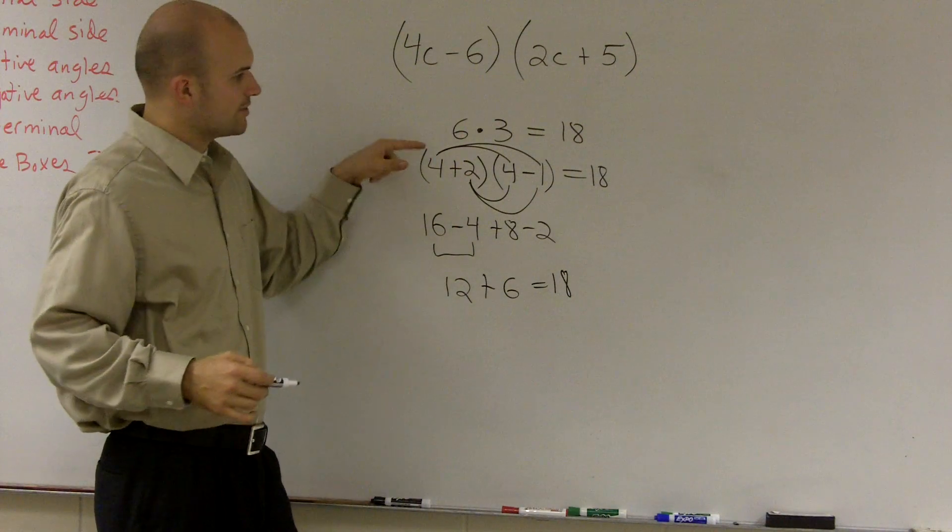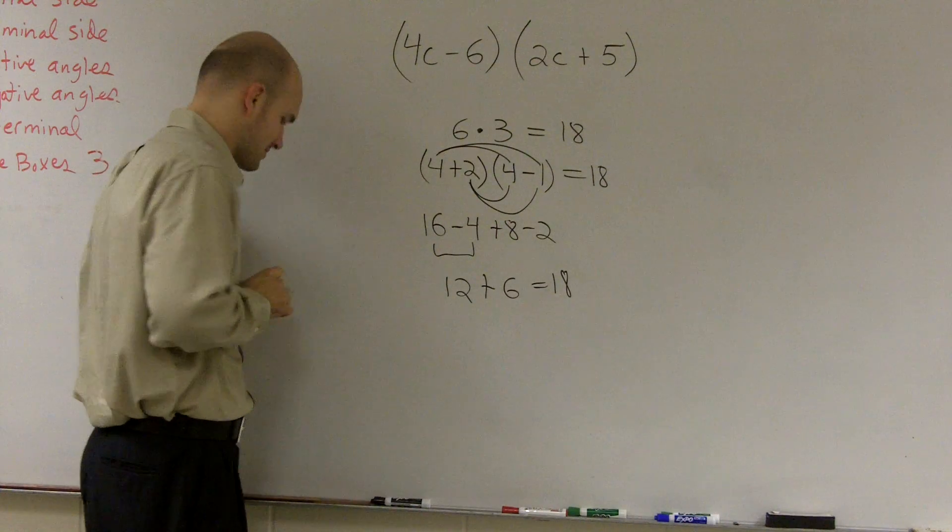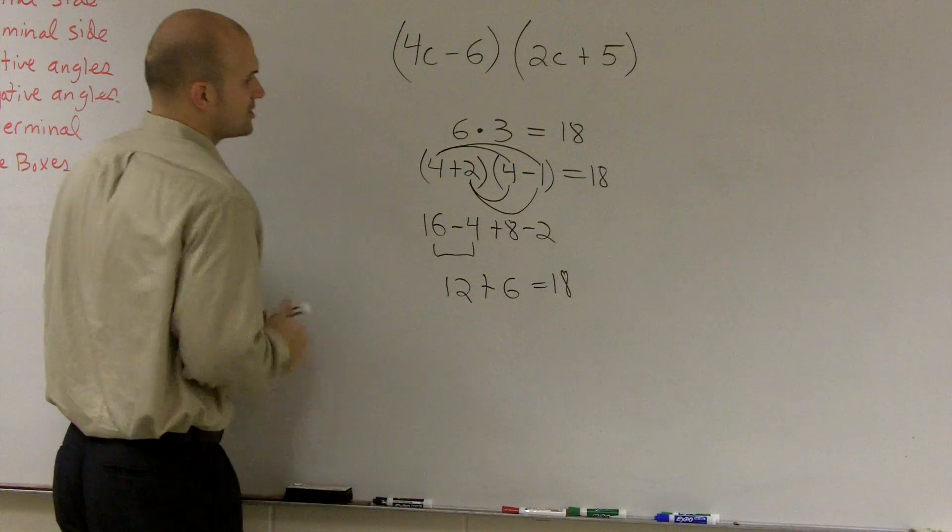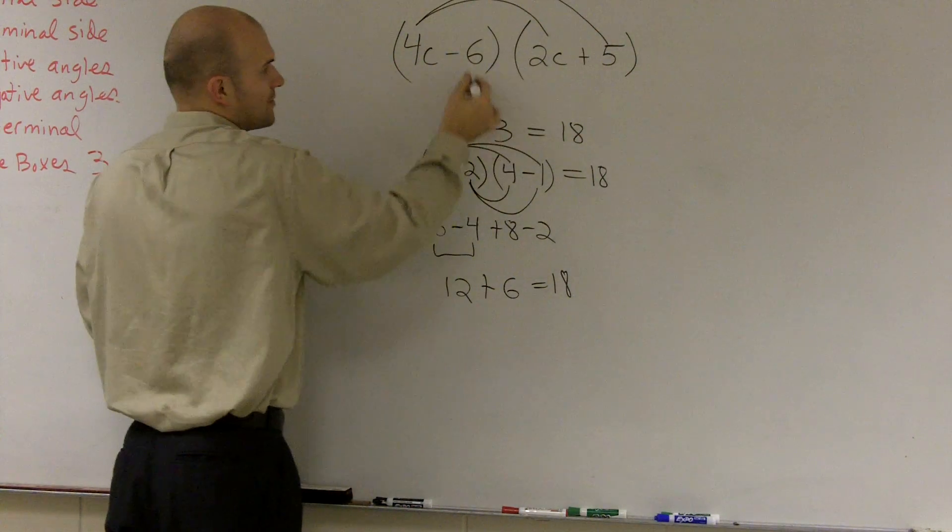So therefore, you notice, when you multiply these numbers times everything, you're still going to get your 18, which is the exact same answer. So that's why when you're multiplying binomials, you want to multiply your front number times that front number, and this front number times that one.